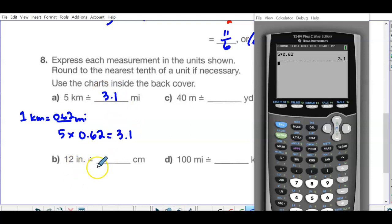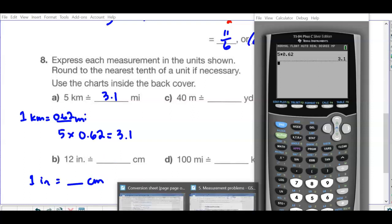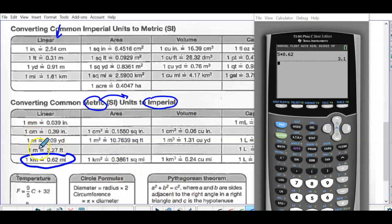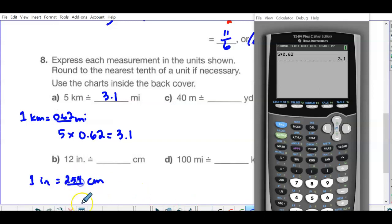Next one, inches to centimeters. So I'm looking for 1 inch equals how many centimeters. Look in your chart. 1 inch equals 2.54 centimeters. So then I've got 12 inches, so I want to multiply by 2.54. So 12 times 2.54, 30.48. Now it says round to the nearest tenth, so this would actually be 30.5.